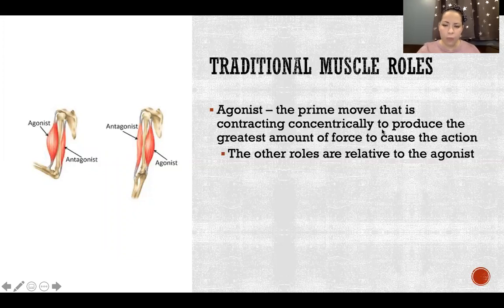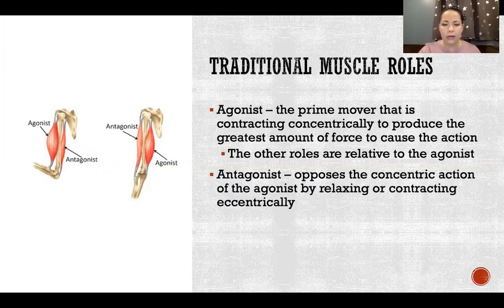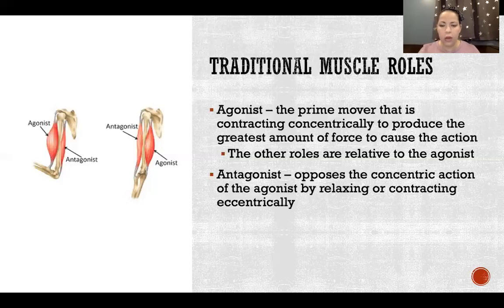The other roles we're going to define here — antagonist, synergist, etc. — are all in relationship to whatever we've defined as the agonist. The antagonist opposes the concentric action of the agonist by relaxing or contracting eccentrically. It's the muscle that is opposite of the agonist — the biggest, strongest muscle that has the opposite actions when it acts concentrically.